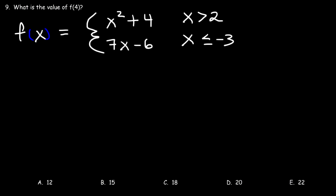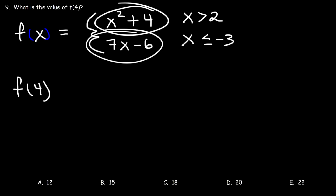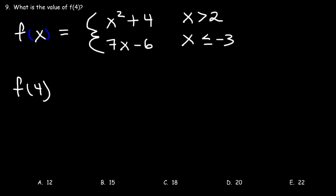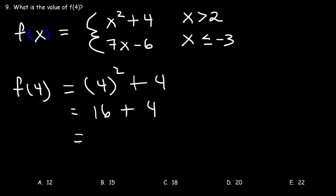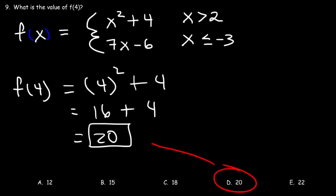Number 9. What is the value of f(4)? We have a piecewise function. Since 4 is greater than 2 and not less than −3, we use the first piece: x² + 4. So it's 4² + 4 = 16 + 4 = 20. Therefore f(4) = 20, which means D is the correct answer choice.